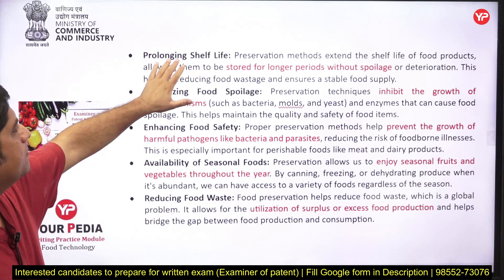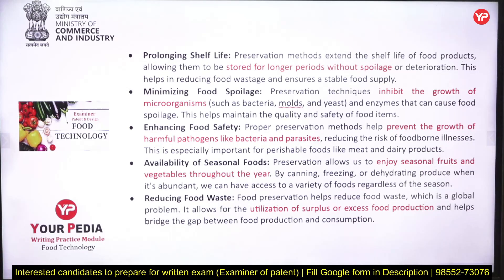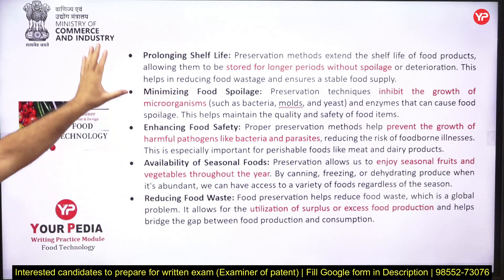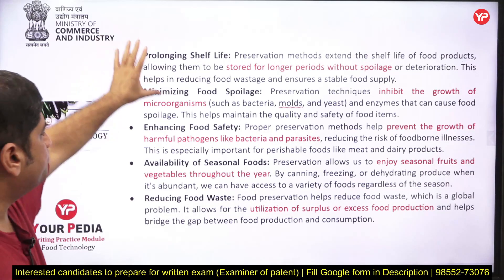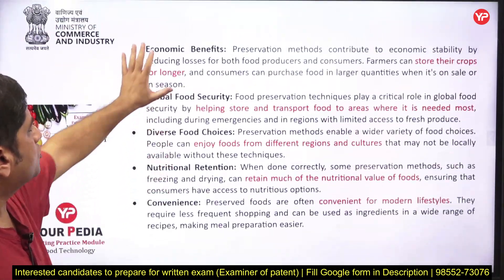Give headings and underline them freely. Key significances include: prolonged shelf life, minimizing food spoilage, enhancing food safety, availability of seasonal food, and reducing food wastage. Underline important phrases such as 'stored for longer period without spoilage,' 'inhibit the growth of microorganisms,' and 'prevent the growth of harmful pathogens.' These are not the only significances — there are many more you can write point-wise.